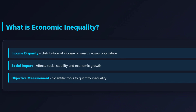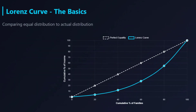So what is it, really? At its heart, it's just a graph — but a really powerful one. All it does is line up the entire population from the poorest person to the richest and ask a pretty simple question: what percentage of the country's total income does each group actually have?